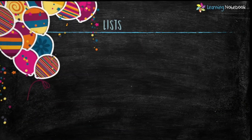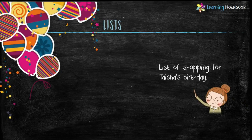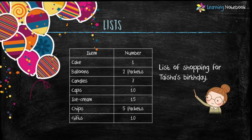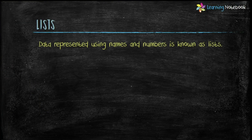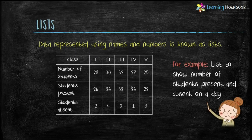Let's first see how data is presented using a list. Taisha's parents are shopping for her birthday and need many things like balloons, caps, candles, ice cream, etc., so they prepare a list so they do not miss out on buying anything. Similarly, we regularly prepare lists to buy grocery items. Data represented using names and numbers is known as a list. For example, this list shows the total number of students, students present, and students absent for classes 1 to 5.